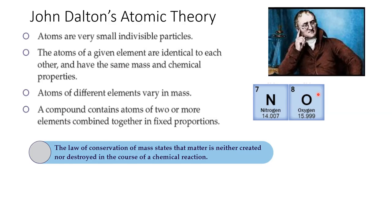Likewise, if you take a sample of oxygen, it'll be made up of millions of individual atoms of oxygen, all identical to each other, with the same mass and chemical properties. It's not exactly correct, but this was the beginning of the atomic theory proposed by Dalton. Atoms of different elements vary in their mass — for example, a nitrogen atom is roughly 14 atomic mass units and an oxygen atom is roughly 16 atomic mass units, so the masses of different elements vary.